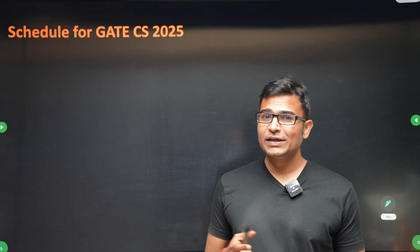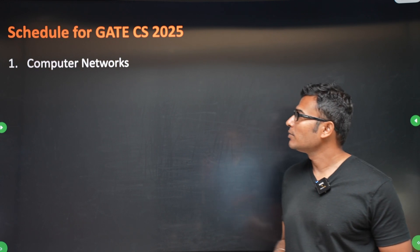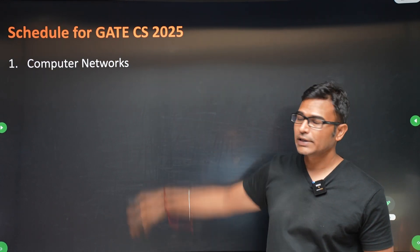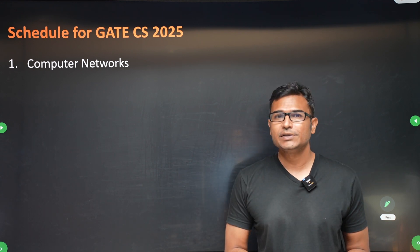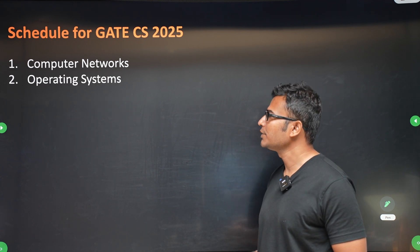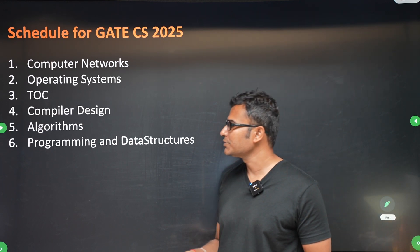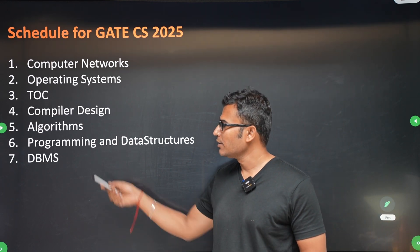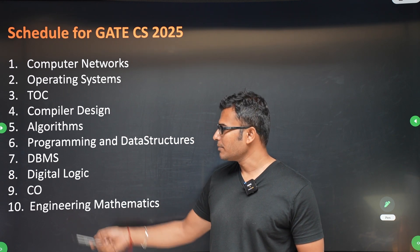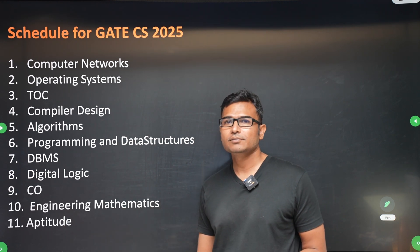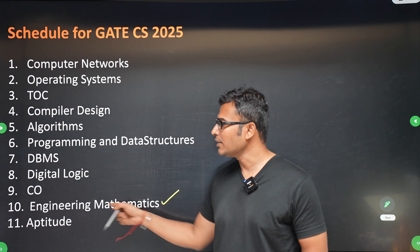Hi everyone, I want to give you some more details about GATE CS and GATE DA. This is the schedule we are following for GATE CS — this is the order in which we will be completing the syllabus: first computer networks, then operating systems, TOC, compiler design, algorithms, data structures, DBMS, digital circuits, and engineering mathematics, and then aptitude.